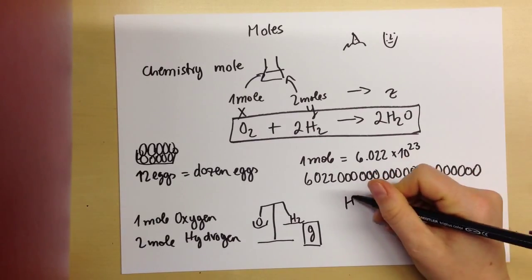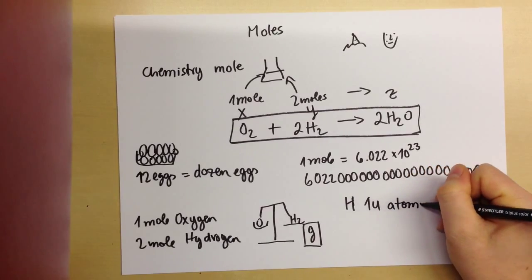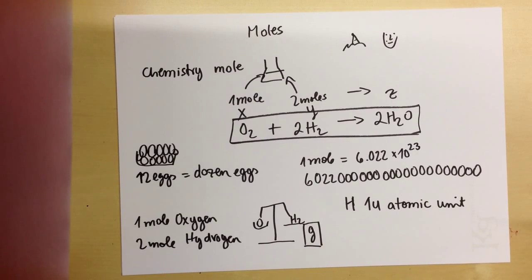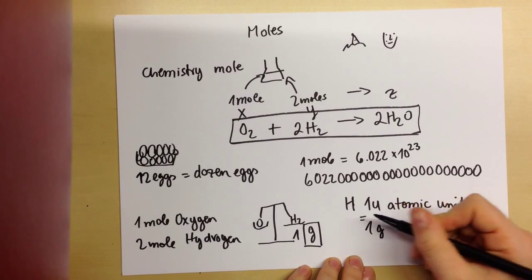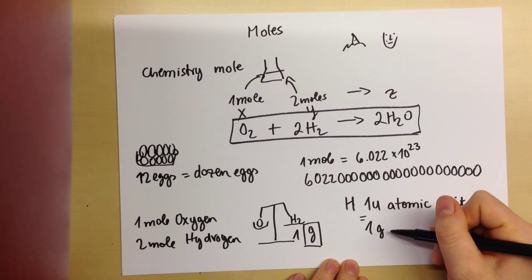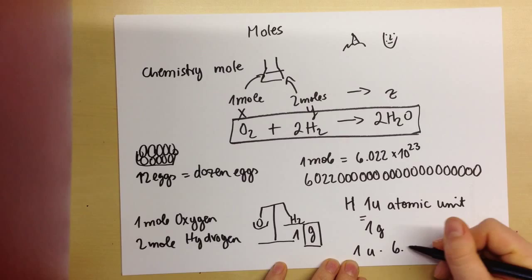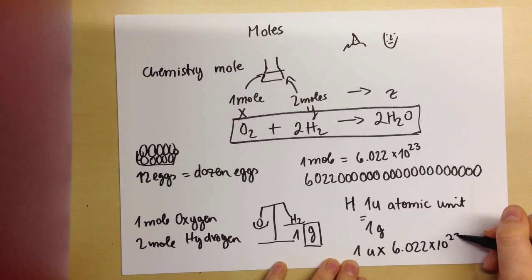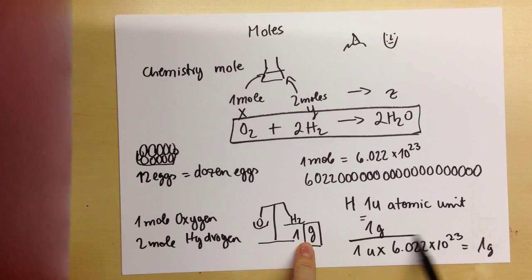Okay, so one hydrogen has the weight of one U. That's one atomic unit. And what we want to measure is, say, one gram. And the relationship between one U and one gram is exactly that one U times 6.022 times 10 to the power of 23 equals one gram. And that's the magic of the mole.